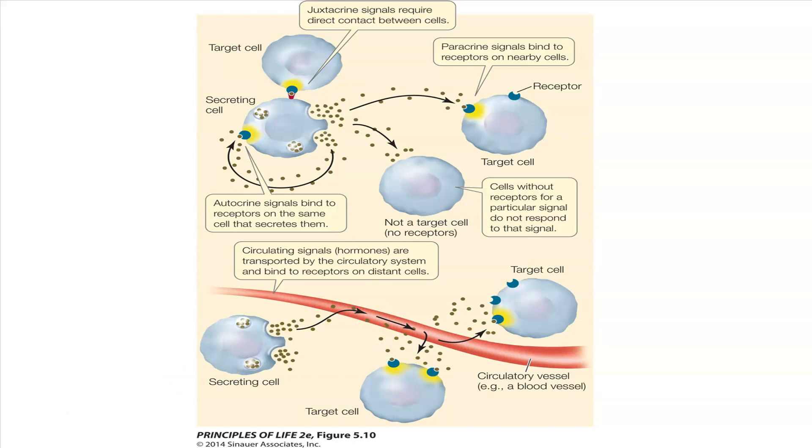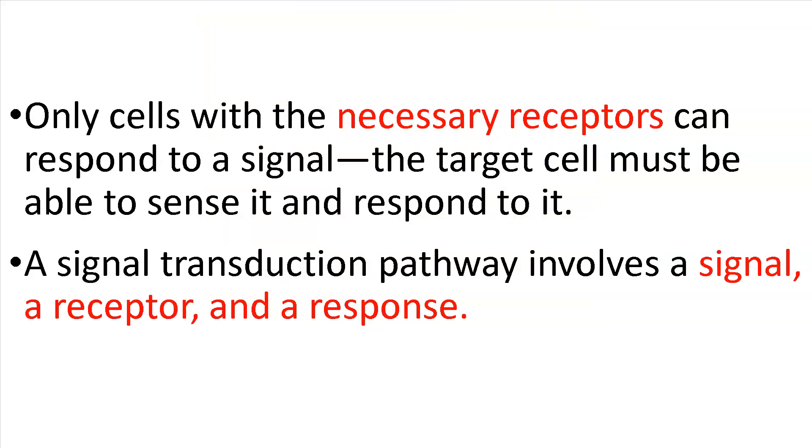So moving on, only cells with the necessary receptors can respond to a signal. The target cell must be able to sense it and respond. Does that make sense? If there's a signal around, you have to be able to receive that signal. So a signal transduction pathway involves a signal. Again, I would know this, a signal, a receptor, and the response, and it involves those three.